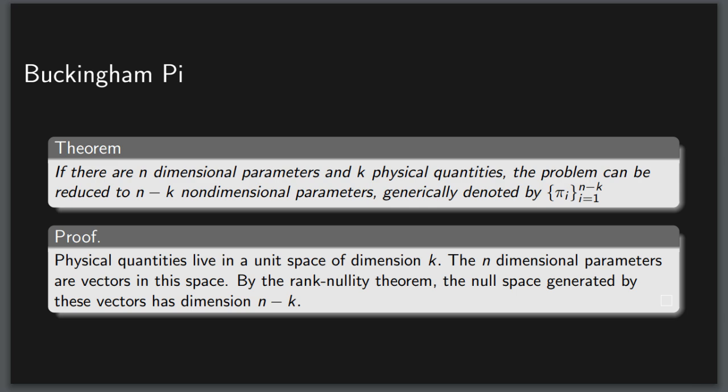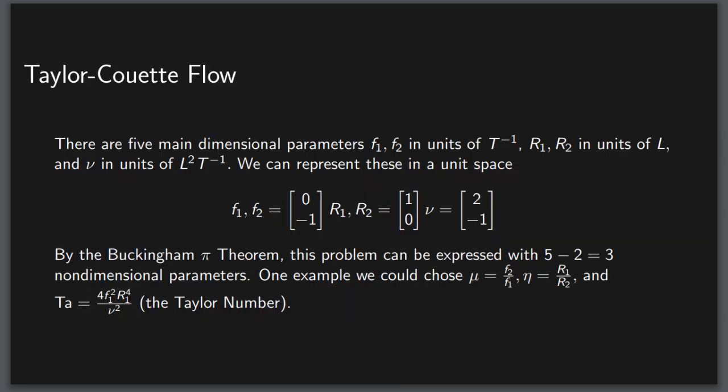For example, in the Taylor-Couette flow, we have five dimensional parameters and two physical quantities, time and length. That means we can reduce the problem to three non-dimensional parameters that span this null space. One choice of what we could use are mu, the ratio of angular velocity, eta, the ratio of radii, and this final quantity, which matches the viscosity with the inner angular velocity and radius, which would later bear Taylor's name.